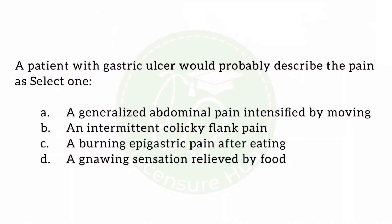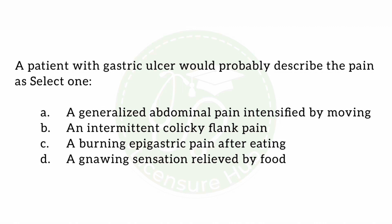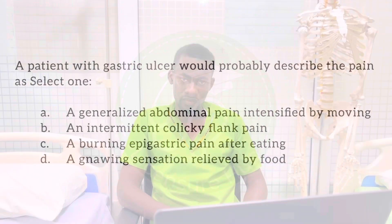To begin with, our first question for the day: a patient with gastric ulcer will probably describe the pain as: A) a generalized abdominal pain intensified by moving; B) intermittent colicky flank pain; C) a burning epigastric pain after eating; or D) a gnawing sensation relieved by food.